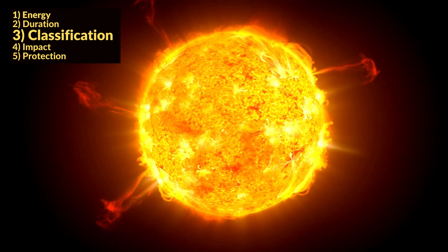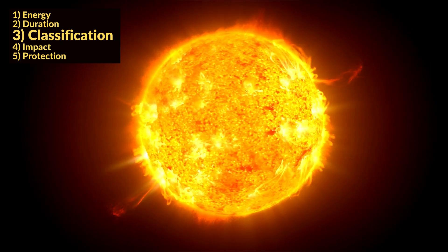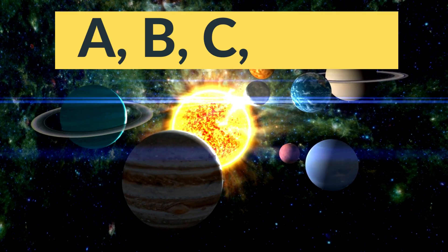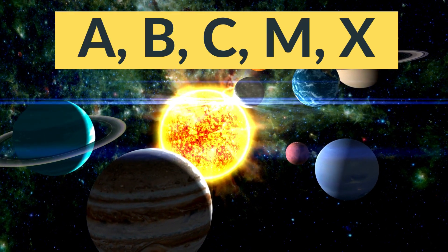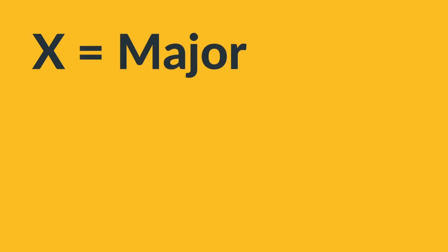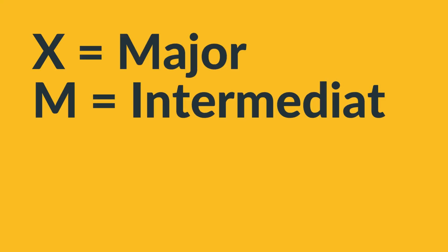How are solar flares classified? Solar flares are classified as alphabetic letters as A, B, C, M, X. All types of solar flares have different levels of strength such as X-class are the major events, M-class are intermediate, whereas C-class flares are considered as small ones which are slightly noticeable from earth.